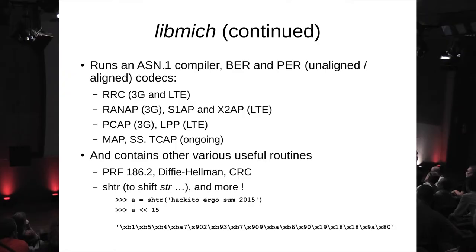There is also PCAP and LPP, which are protocols for localization management in mobile networks. There is support for MAP, which is used between mobile core networks and between operators. There is ongoing support for TCAP but it's not really working yet. There are also other utilities feeding this library like Diffie-Hellman, CRC, some pseudo-random functions from NIST, and so on.